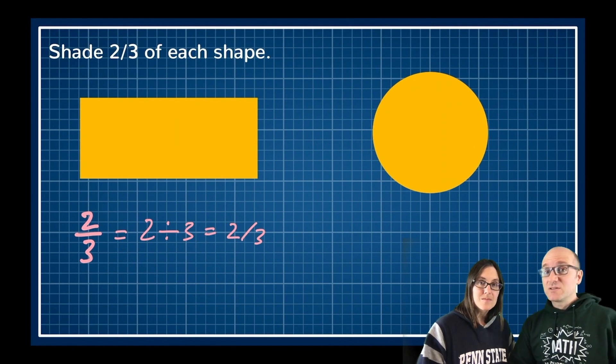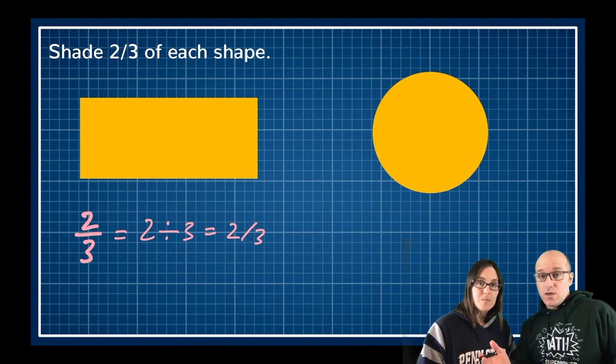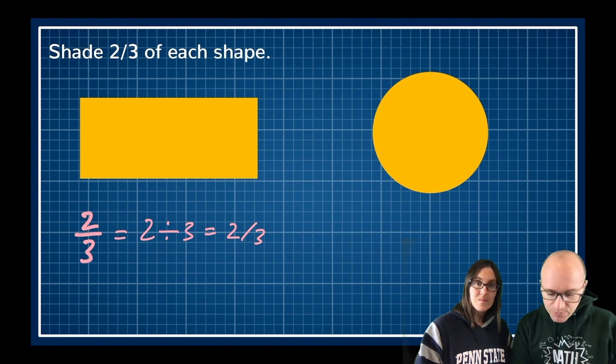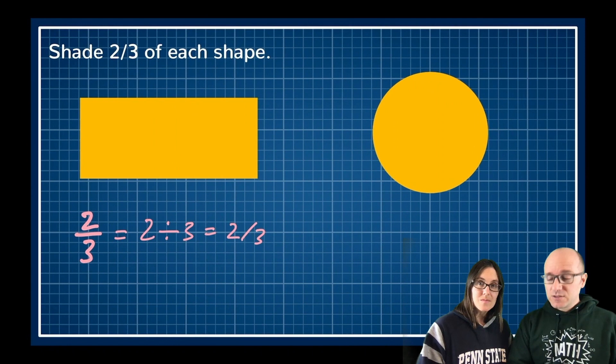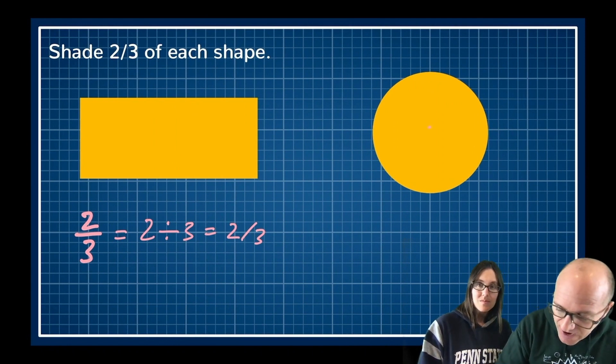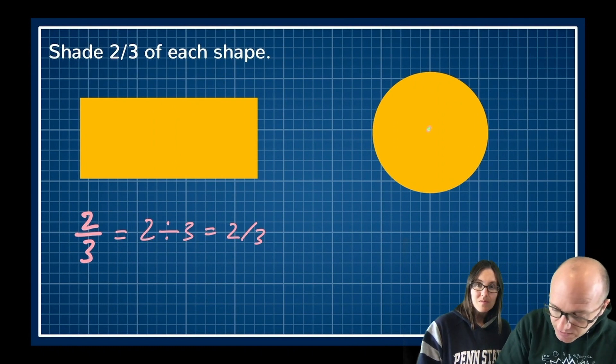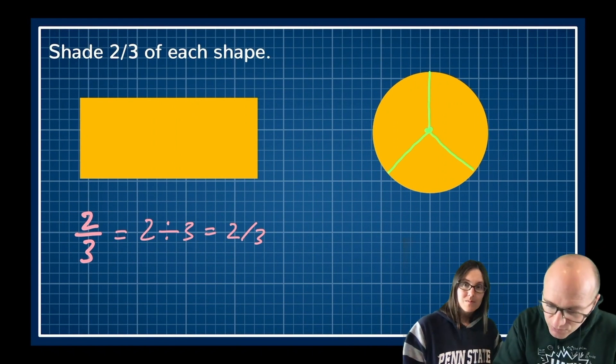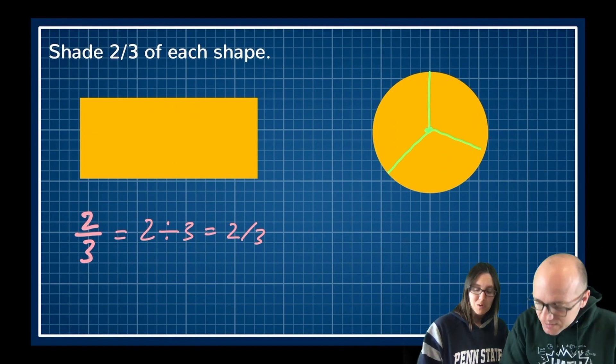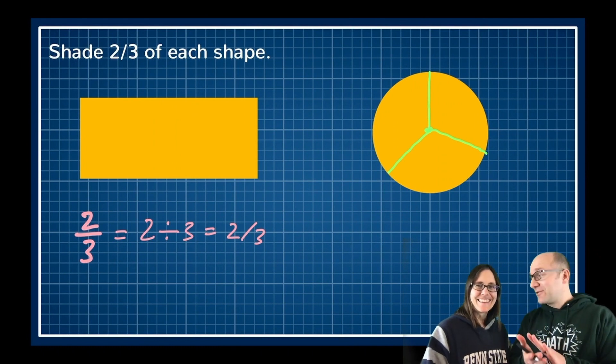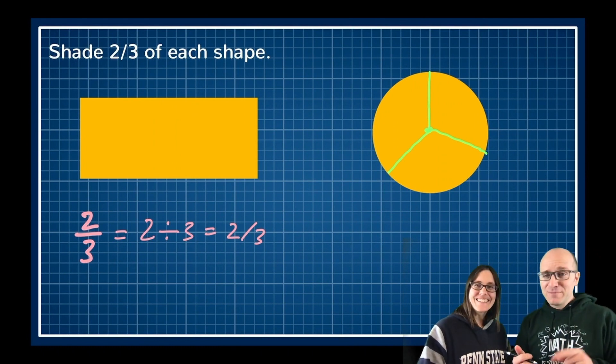So two divided by three means two parts out of three. When we look at this bottom number, the three, that tells us how many slices we're going to be making. So I've got my pizza here. I'm slicing up my pizza into three equal pieces. Oh no when it comes to pizza slices you've got to get it right otherwise one kid will complain he got more than me.